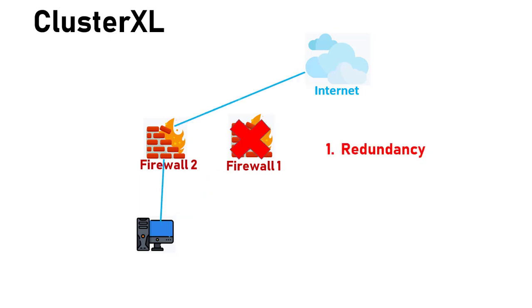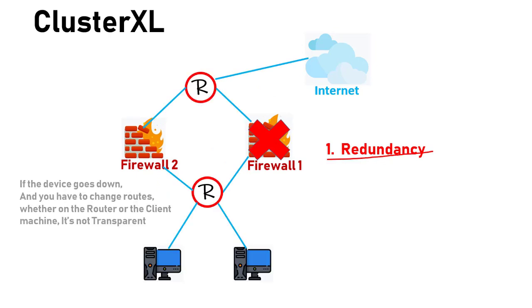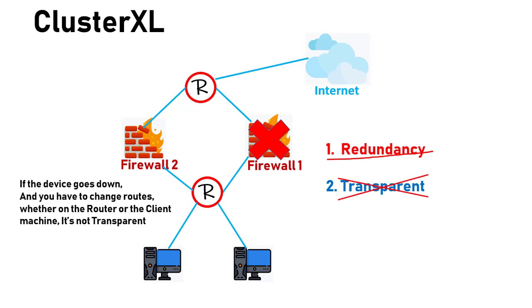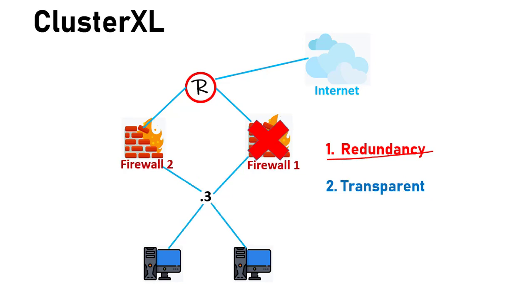The second device picks it up. The second thing you need to have: your solution has to be transparent. If you have to manually change routes, whether on the client machine or on your router to be able to pass traffic, your solution might be redundant, but it's not transparent. If it fails and the admin has to do something, you lose time. It might take you five minutes, you call an administrator — it might take longer. The solution has to be transparent.